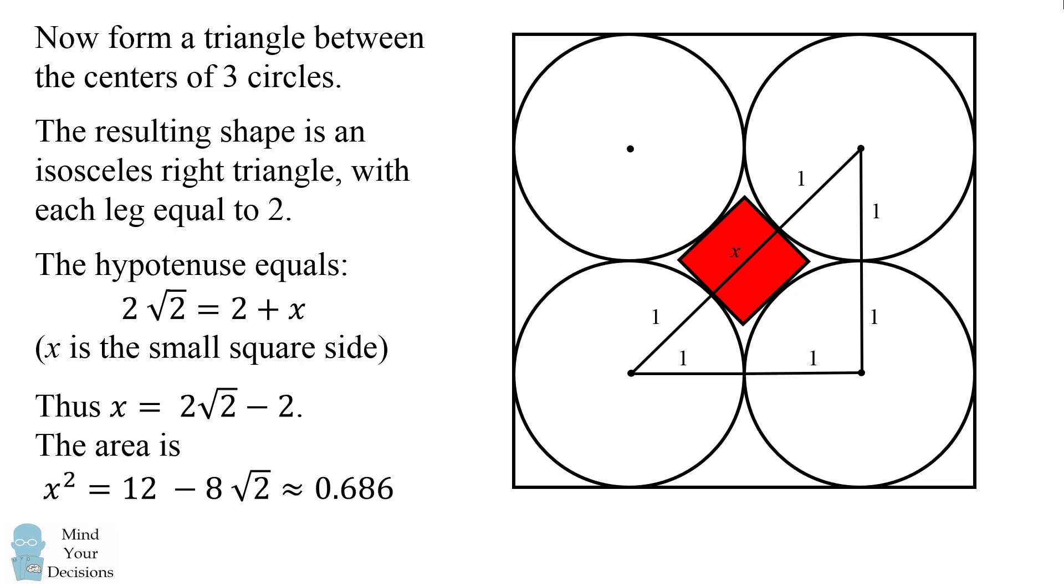We can therefore solve that x is equal to two square root of two minus two. This means the area of the small square is the square of x, which equals twelve minus eight square root of two, and that's approximately point six eight six.